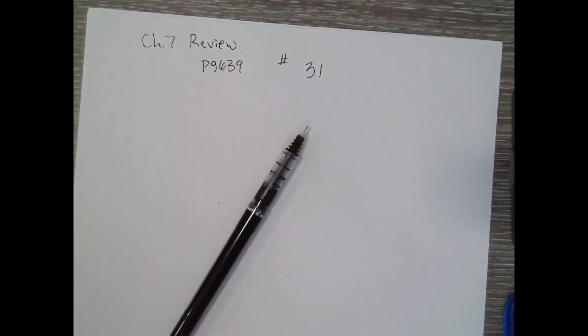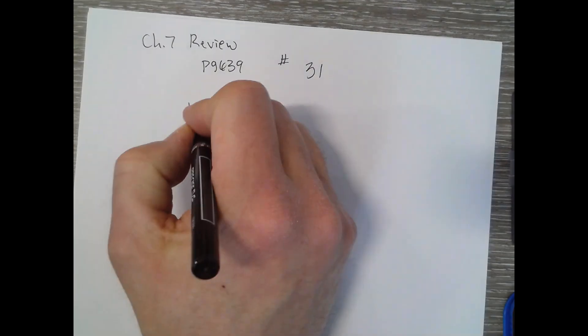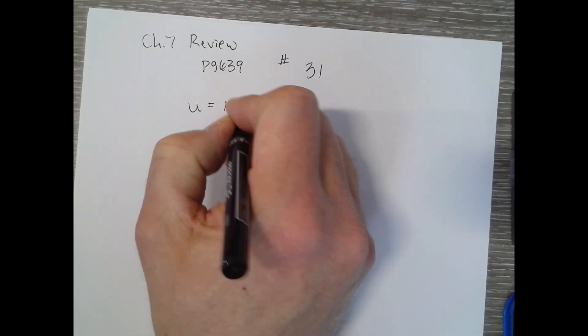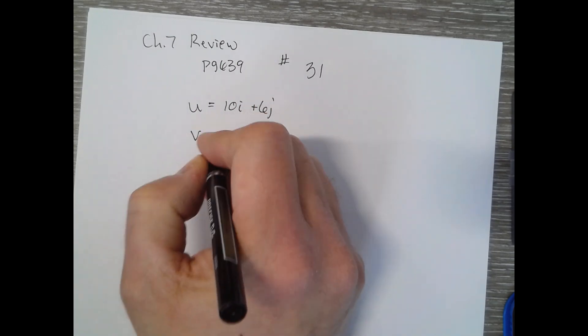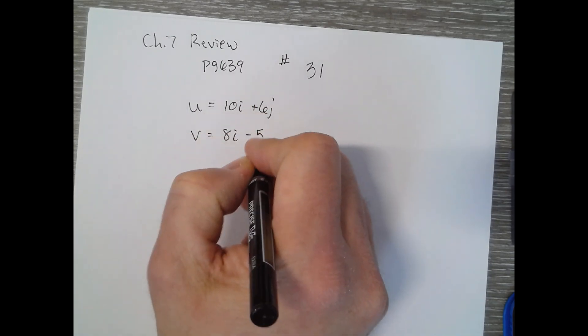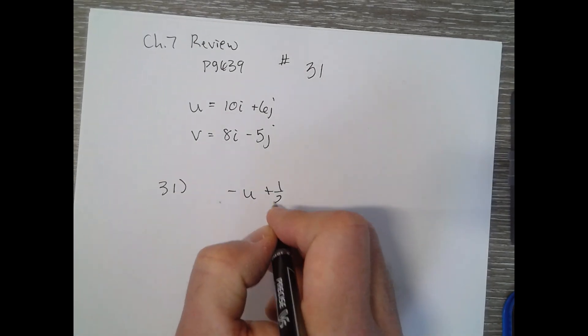Chapter 7 Review, page 639, number 31. It says perform the indicated operation where U is 10I plus 6J and V is 8I minus 5J. For number 31, we want negative U plus one half V.